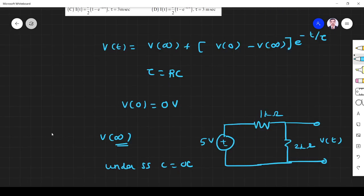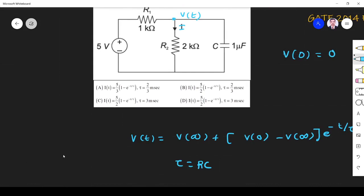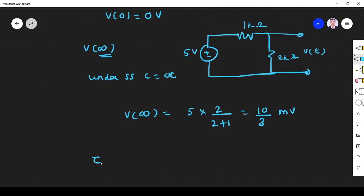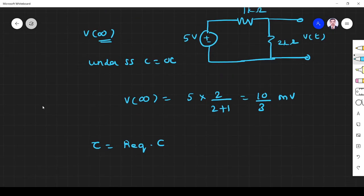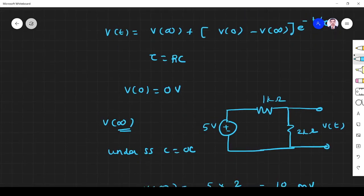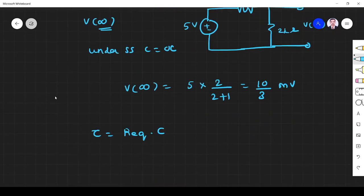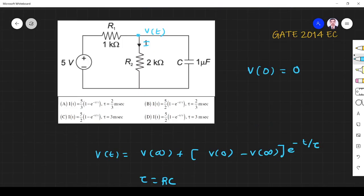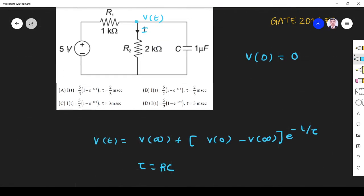Okay. Now I got Vt, sorry V(∞). I need τ. τ is equal to R into C. Time constant R. Here we have two resistors. So R_equivalent into C. If I want to find R_equivalent, what I need to do? I have to find the Thevenin equivalent resistance. So what is the Thevenin equivalent resistance? Whenever I want to find the Thevenin equivalent resistance, short it. Short the voltage source and remove this capacitor because I have to find across this.